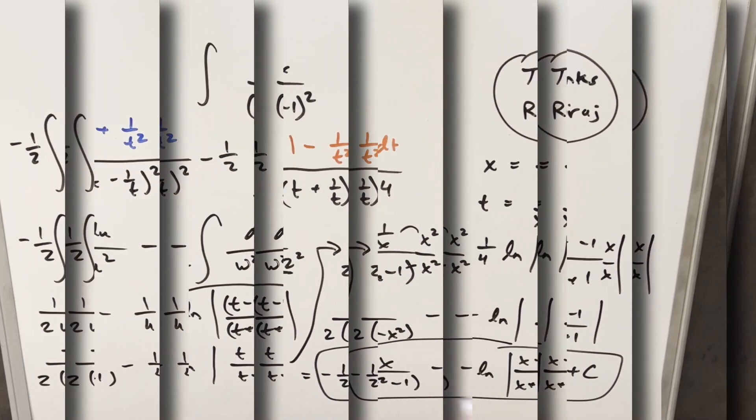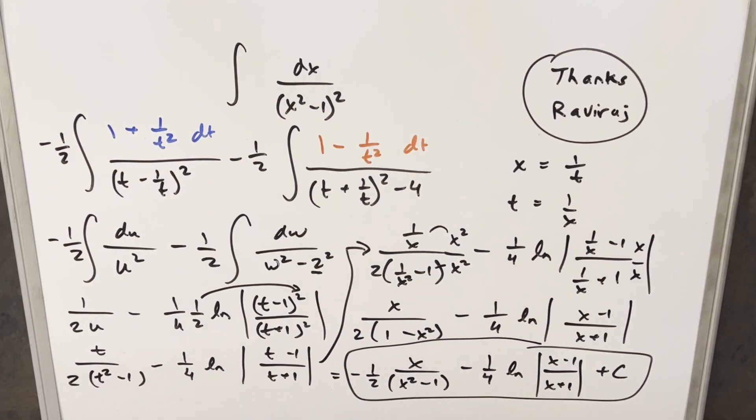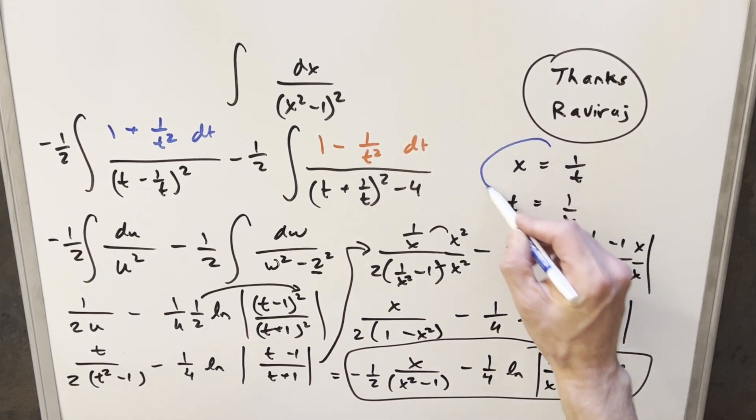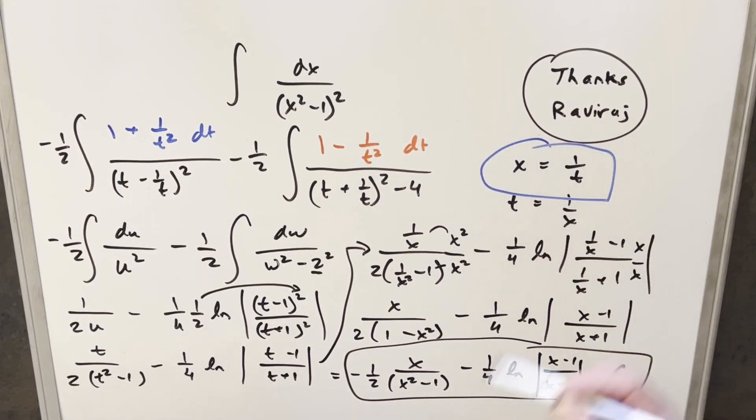And that's it. So there you have it — a good alternate method using the substitution x equals 1 over t. Thanks everyone for watching. Have a great day.